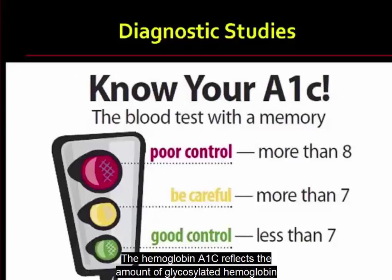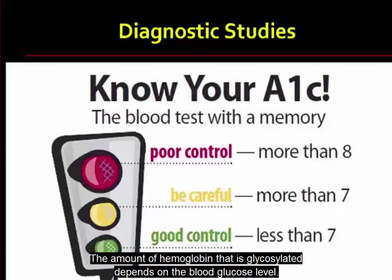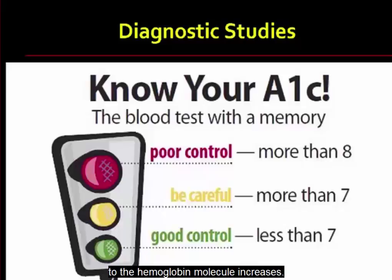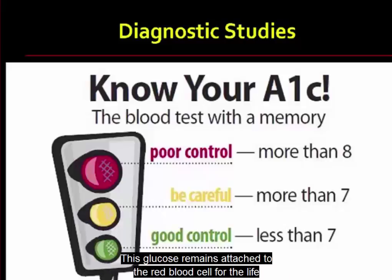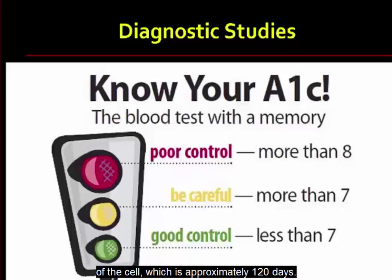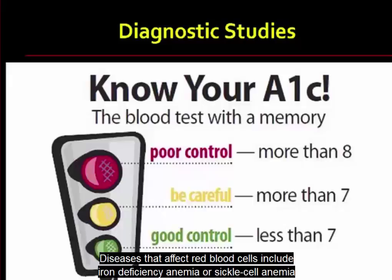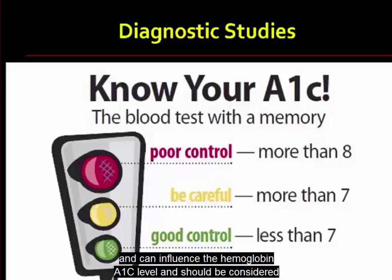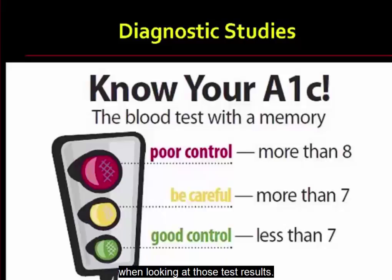The hemoglobin A1C reflects the amount of glycosylated hemoglobin as a percentage of total hemoglobin. The amount of hemoglobin that is glycosylated depends on the blood glucose level. When blood glucose levels are elevated over time, the amount of glucose attached to the hemoglobin molecule increases. This glucose remains attached to the red blood cell for the life of the cell, which is approximately 120 days. Diseases that affect red blood cells, such as iron deficiency anemia or sickle cell anemia, can influence the hemoglobin A1C level.